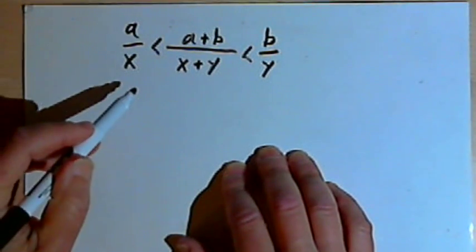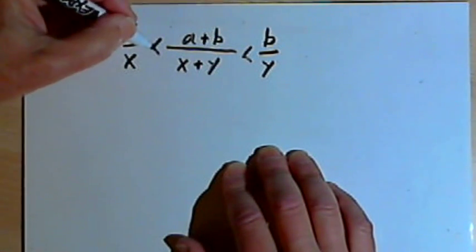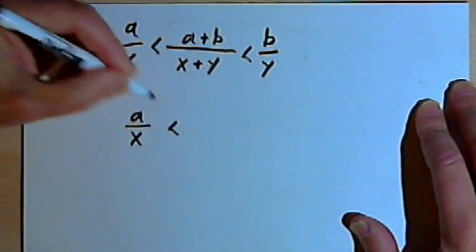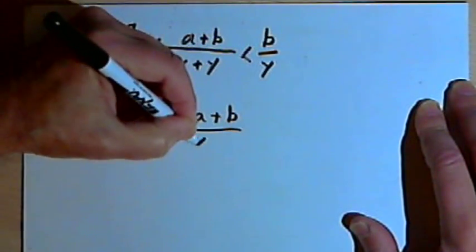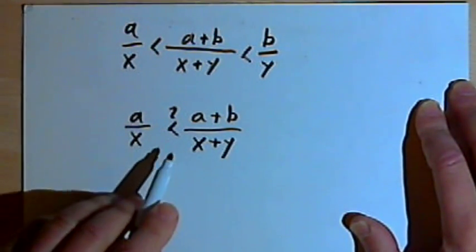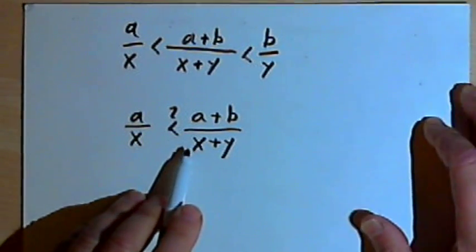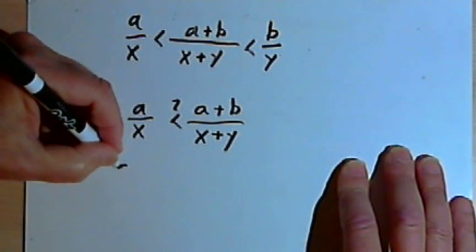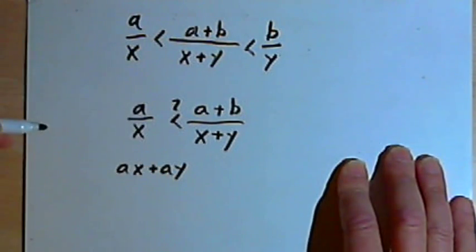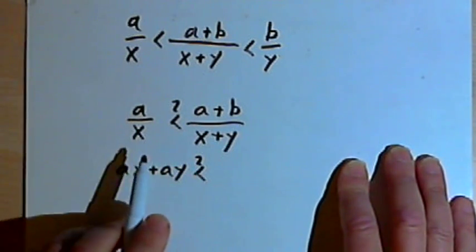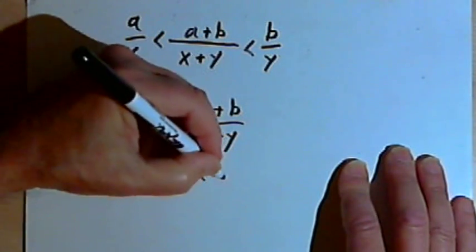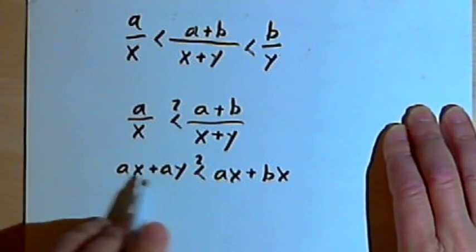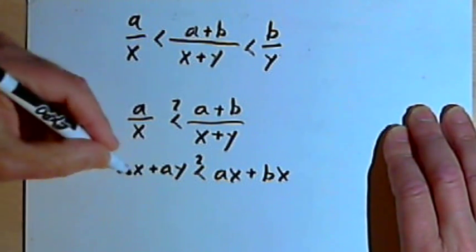First, I'm going to prove that a over x is less than a plus b over x plus y. I'll put a question mark above the inequality sign because that's what I want to check. The first step is to cross-multiply: I multiply a times x plus y, which gives me ax plus ay. And I check if that's less than x times a plus b, which is ax plus bx. I've got ax on both sides of this inequality, so I can subtract that from both sides — I'll just cross them out.